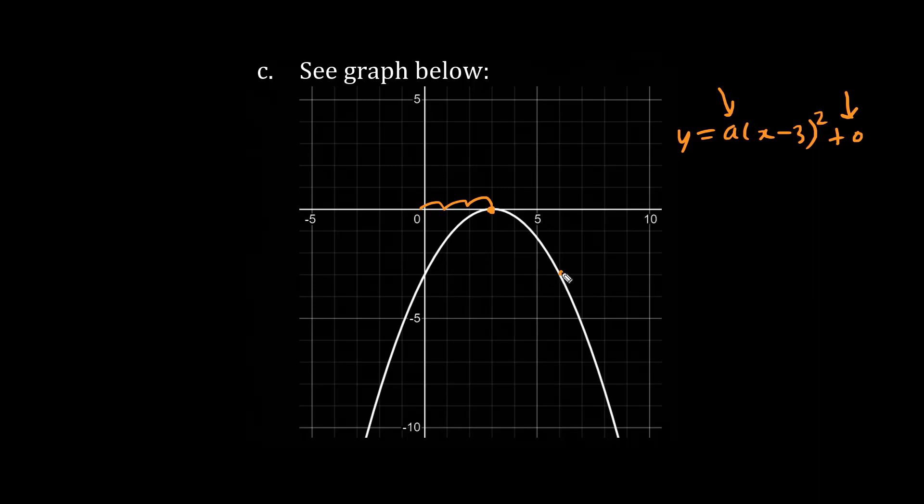Notice how the parabola cuts through this point here, as well as this point here. Let's just use this one here. This is 0 comma minus 3. One, 2, 3. Y is minus 3. And we have x is 0. So we have 0 minus 3 squared plus 0. We're not going to write. Negative 3 squared is 9. So we have 9A equals minus 3.